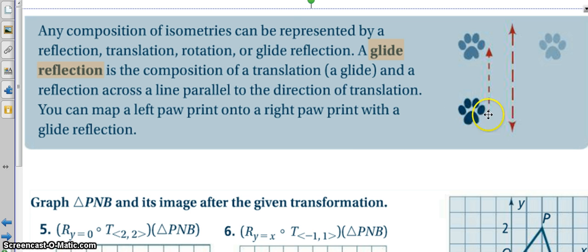Now, this paw print is a little bit hard to tell, but if you pay attention to the notch in the paw print, so this notch right here, notice that it is to the right-hand side. As we glide, that notch stays on the right-hand side, but then as we reflect, that notch is now on the left-hand side, because we reflected over whatever was on the right, now is on the left, and vice versa.